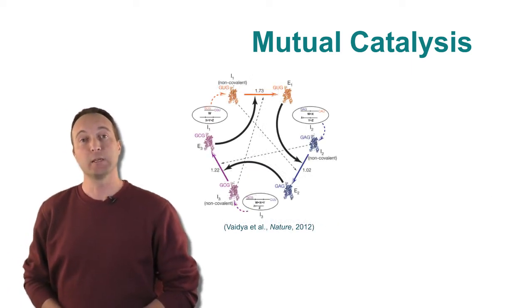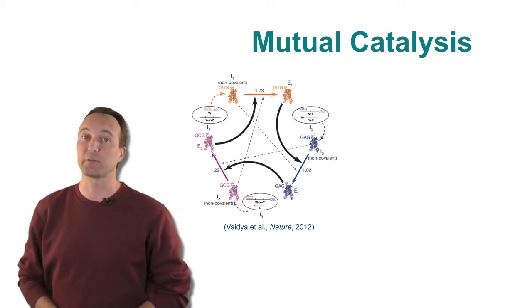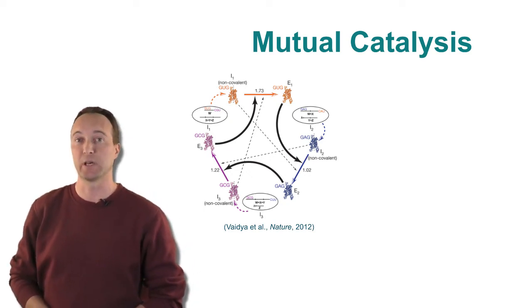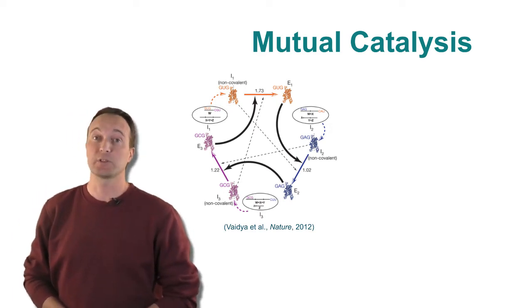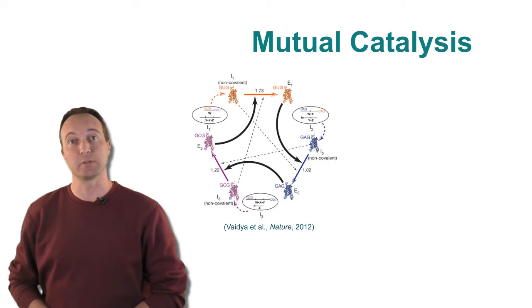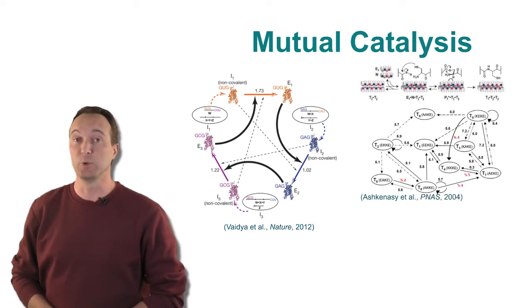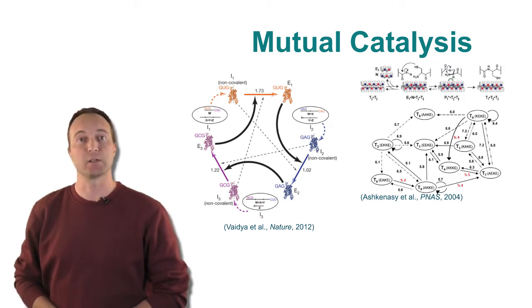More recently, an experimental system with up to 16 RNA molecules, each of around 200 nucleotides long, that mutually catalyze each other's formation from shorter fragments was created in the lab of Niles Lehman at Portland State University. However, such experimental systems are not restricted to RNA molecules. A similar set of nine mutually catalytic peptides, or short proteins, was created and studied in detail by Ghadiri and Ashkenasy and colleagues, then at the Scripps Research Institute.